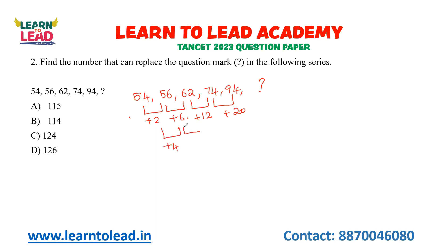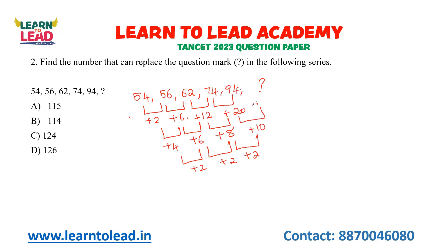Look at the second-level differences: +4, +6, +8 — they increase by 2 each time. So the next second-level difference is +10, making the next first-level difference 20 + 10 = 30. Therefore 94 + 30 = 124 is your answer. The concept used here is difference of difference.